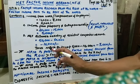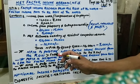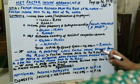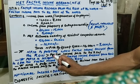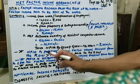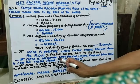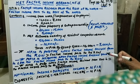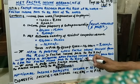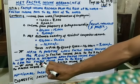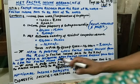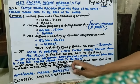Net Factor Income from Abroad can be positive, negative, or zero. It is positive when factor income received from the rest of the world is greater than factor income paid to the rest of the world. It is negative when factor income received from the rest of the world is less than factor income paid to the rest of the world. And it is zero when factor income received from the rest of the world is equal to factor income paid to the rest of the world.